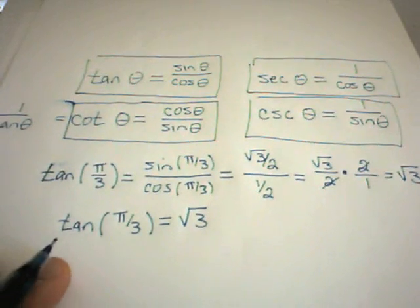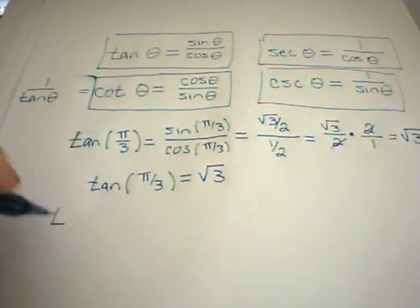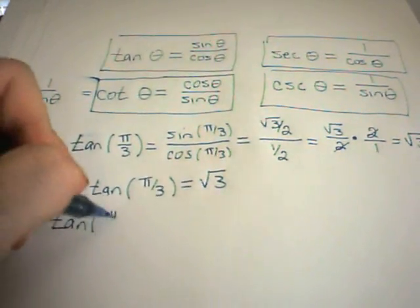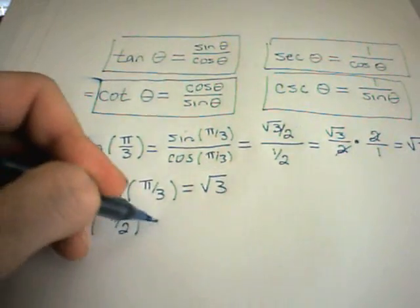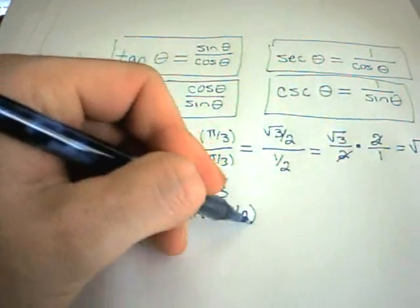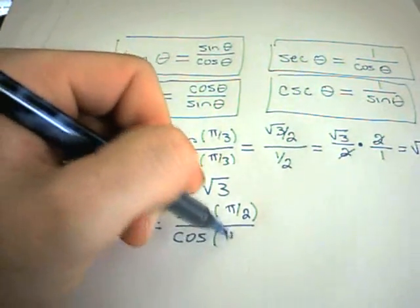Okay, suppose we want to figure out, let's do another. Let's say tangent of pi over 2. So again, that's simply defined to be sine of pi over 2 divided by cosine of pi over 2.